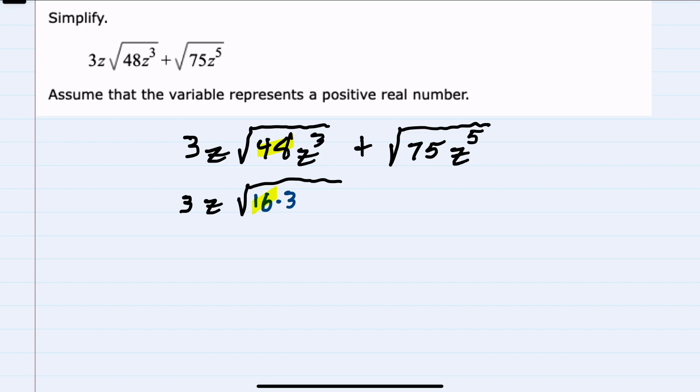For the z³, I'm going to rewrite that as z² times z. I'm doing this because the z² has a power that is a multiple of 2, so I'll be able to bring that out from underneath the radical.